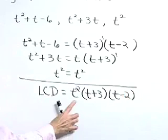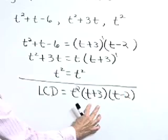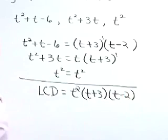Therefore, our lowest common denominator is t squared times t plus 3 times t minus 2.